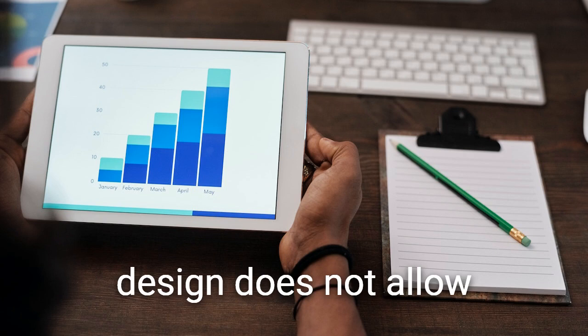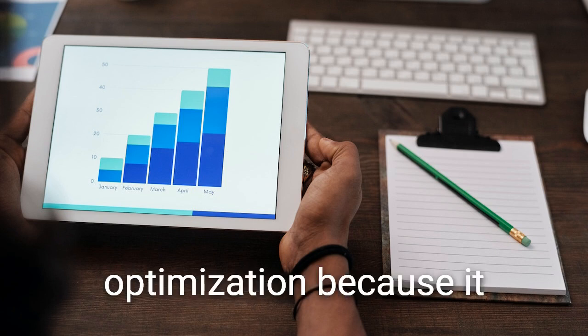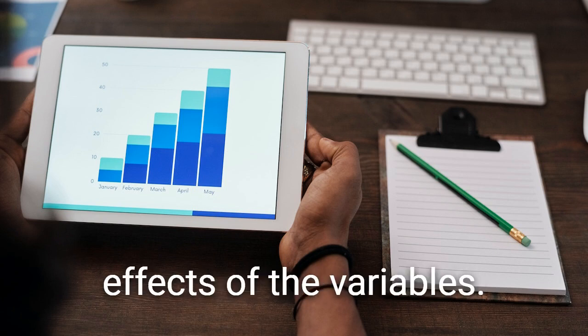Plackett-Burman design does not allow for response variable optimization because it only identifies the main effects of the variables.